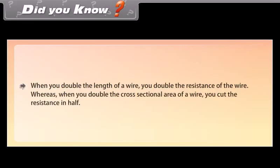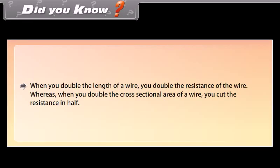Did you know? When you double the length of a wire, you double the resistance of the wire. Whereas, when you double the cross-sectional area of a wire, you cut the resistance in half.